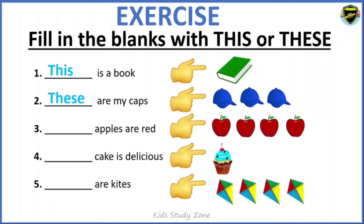___ apples are red. Here we are talking about plural — there are many apples. So we write 'These apples are red.' Next: ___ cake is delicious. We are talking about one cake, which is singular. So we write 'This cake is delicious.' Next: ___ are kites. We can see there are many kites, so this is plural. We write 'These are kites.'